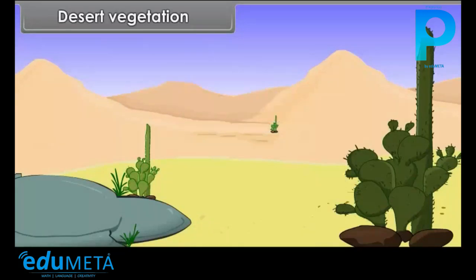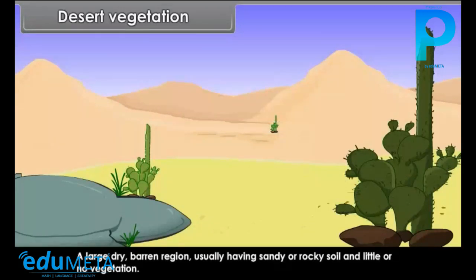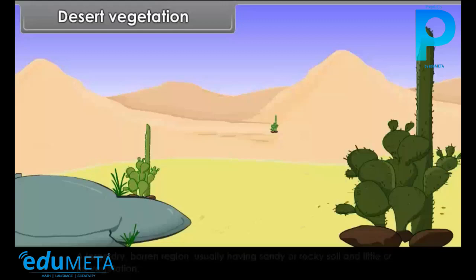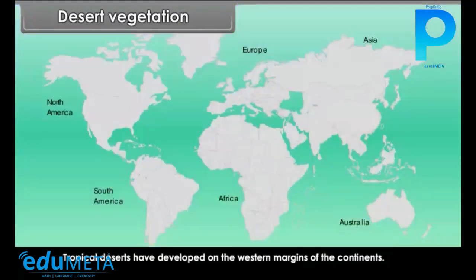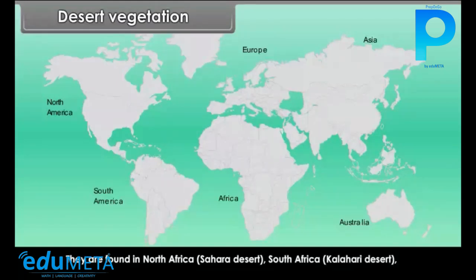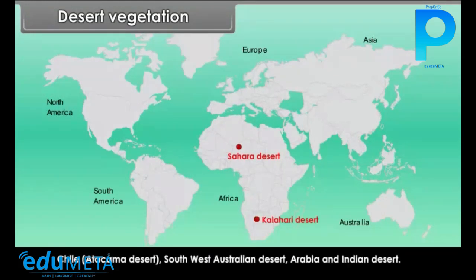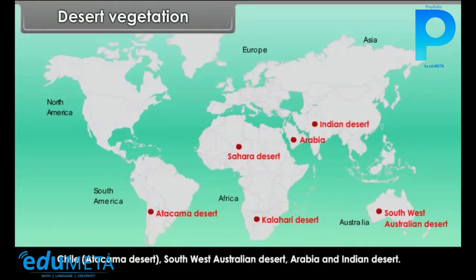Desert Vegetation: A large dry barren region usually having sandy or rocky soil and little or no vegetation. Tropical deserts have developed on the western margins of the continents. They are found in North Africa including the Sahara Desert, South Africa including the Kalahari Desert, Chile including the Atacama Desert, the Southwest Australian Desert, Arabia and the Indian Desert.